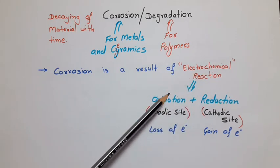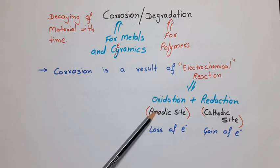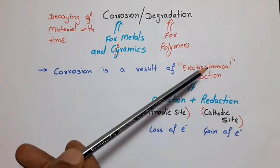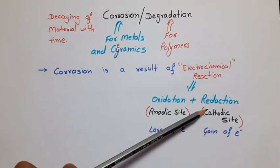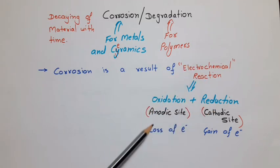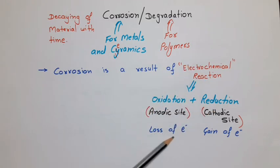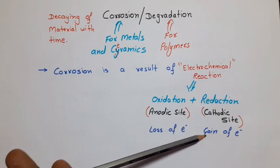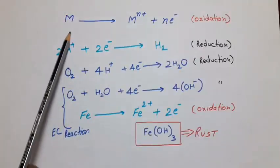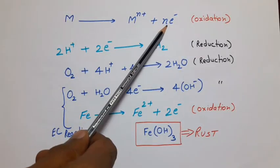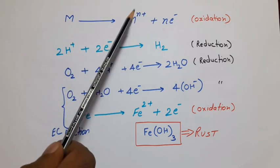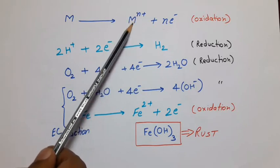The element whose oxidation takes place is known as anodic element and that site is known as anodic site. Similarly, the element whose reduction takes place is known as cathodic element and that site is known as cathodic site. In oxidation, there is a loss of electron from the element and in case of reduction, there is a gain of electron to the element. In the following example, M is any metal whose oxidation takes place and it releases N electrons, and consequently metallic ion M^N+ forms. This reaction is an example of oxidation reaction.